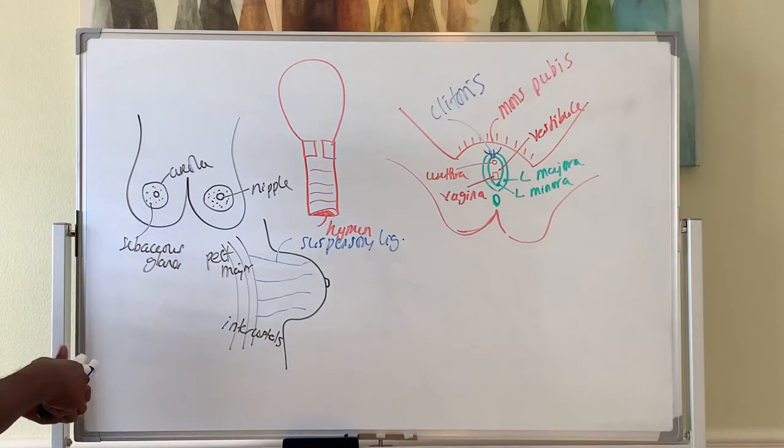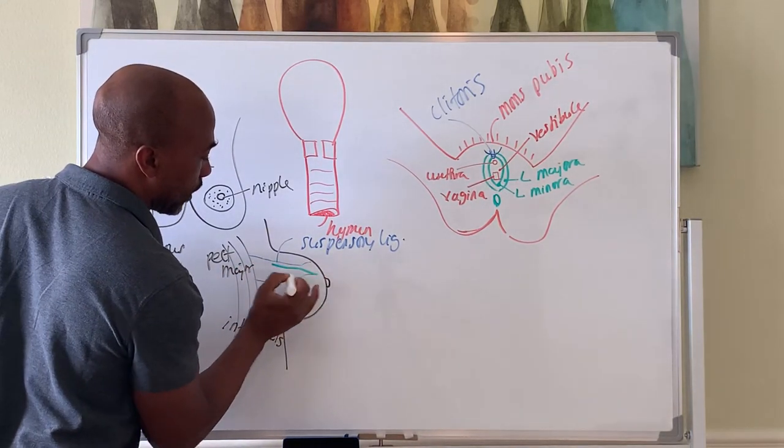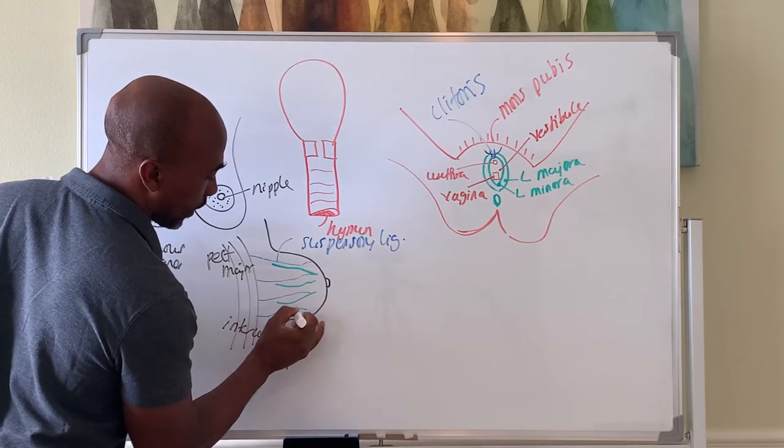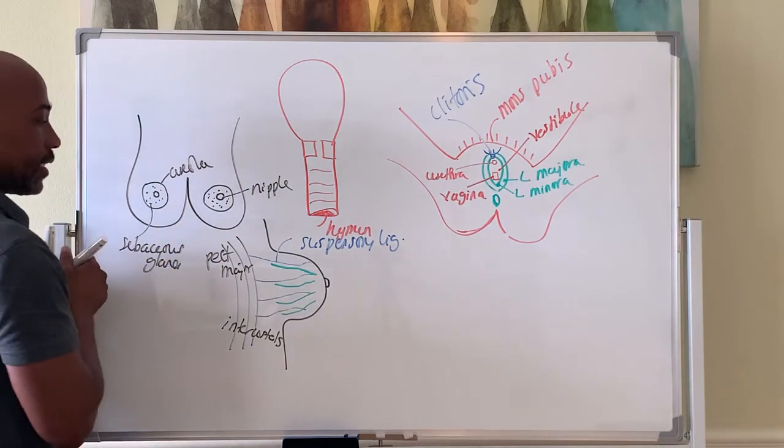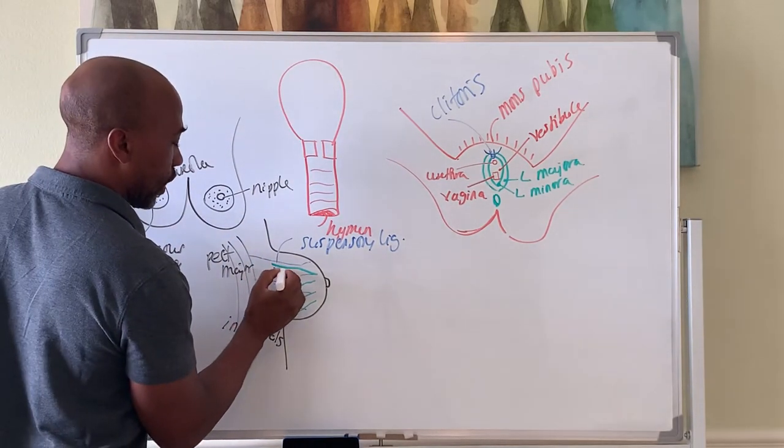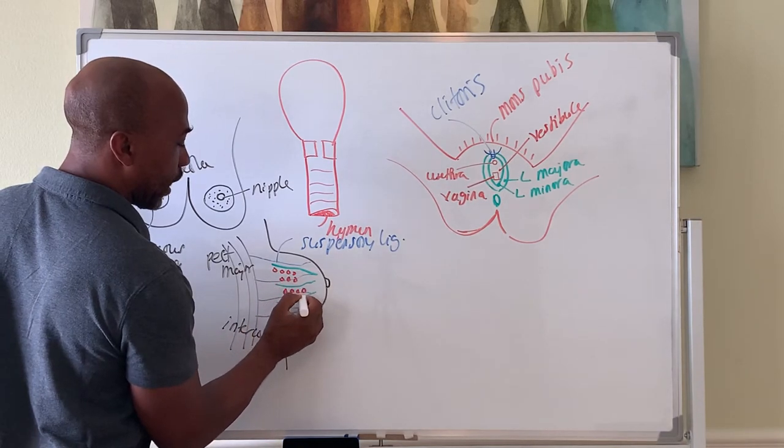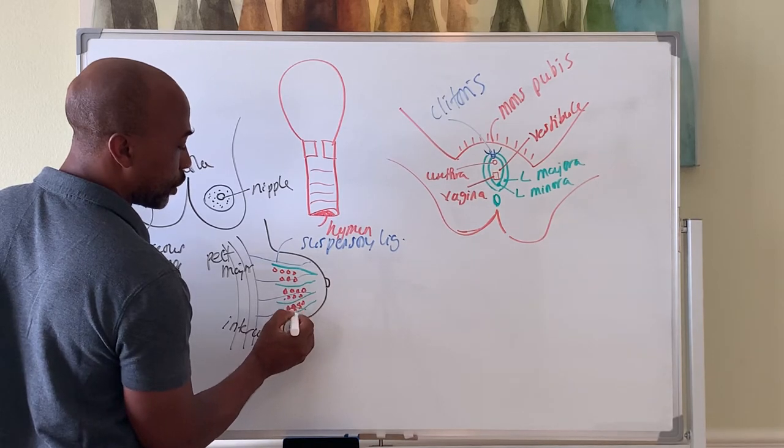Inside the breast you also have lobes. These lobes contain alveoli, and alveoli are the structures that produce milk.